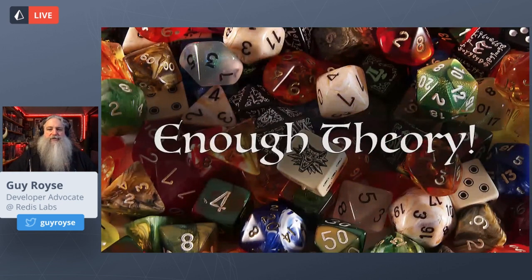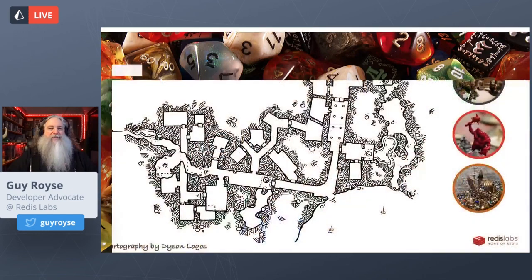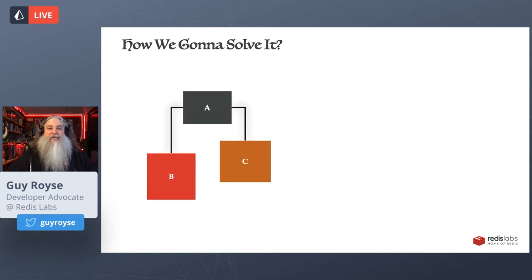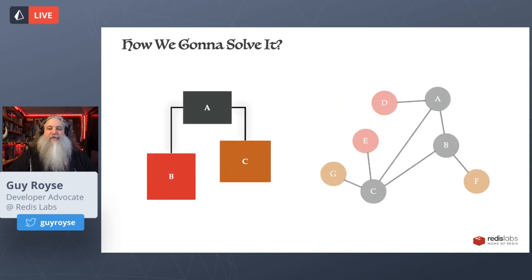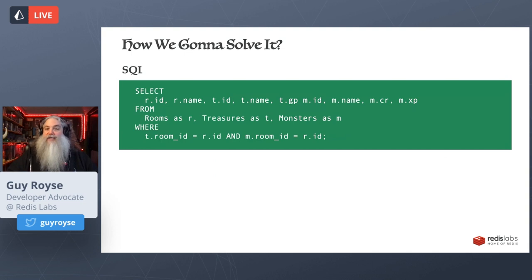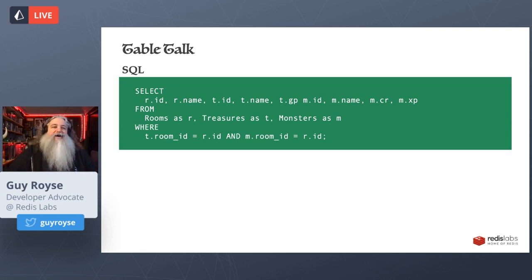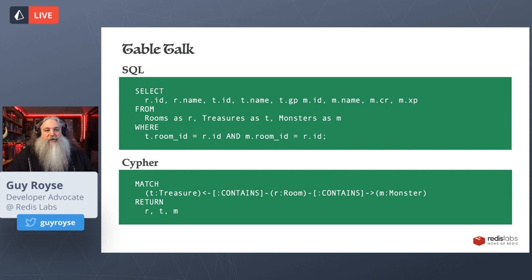Let's get past the theory and start looking at something real, because we've still got the problem of finding the best monsters and the best gold, and we still have to decide whether to solve that with a relational database or a graph database. With a relational database, when you want to write a query, you use SQL — selects, tables, wheres to filter results. In graph databases, a popular language used by Redis Graph is the Cypher query language, and Cypher uses matchers to return nodes and relationships from the graph.